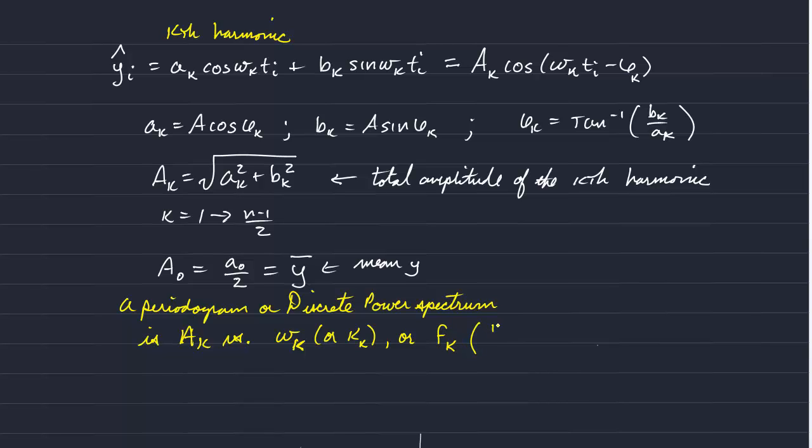And the analogous quantity for a spatial sequence would be one over the wavelength. And so we can sketch our hypothetical periodogram. So on the bottom, let's just say it's the frequency of the kth harmonic. And we're plotting amplitude A sub k.